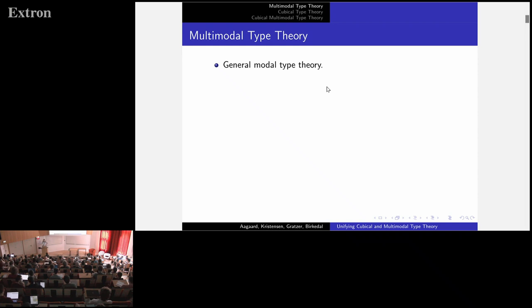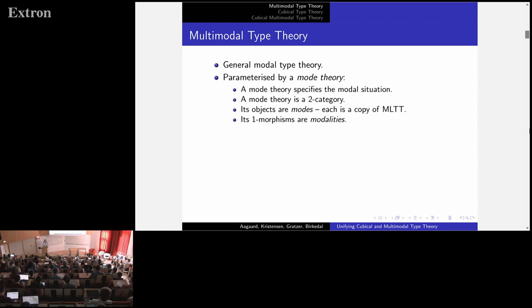So multimodal type theory, which we've just heard a lot about, this is the dependently typed version. The general modal type theory can fit many modal situations, parameterized by a mode theory, which is a two-category. The objects are modes. Each mode we can think of as a copy of Martin-Löf type theory, and the one morphisms are modalities. For example, here is this mode theory, which one may recognize, the equations as that of an adjunction. This mode theory specifies the modal situation of having two adjoint modalities.